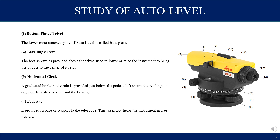Bottom plate or trivet: the lowermost attached plate of the automatic level is called the bottom plate or base plate. This is the plate with which the tripod stand is attached. Leveling screw: the foot screw is provided above the trivet and is used to lower or raise the instrument to bring the bubble to the center of its run.